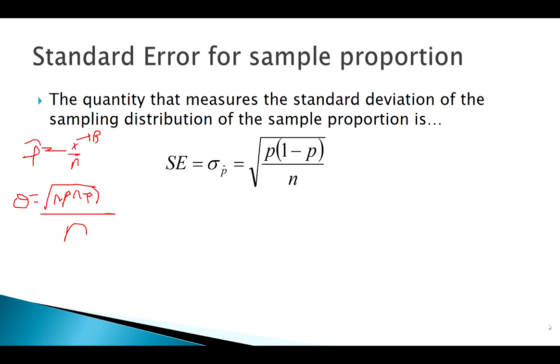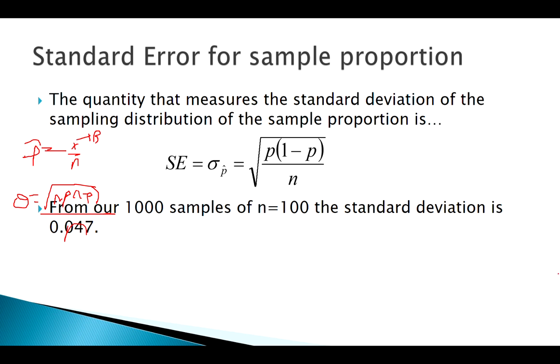You get this. This is the standard error of the sampling distribution of the sample proportion. So let's check that with our example.